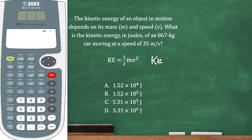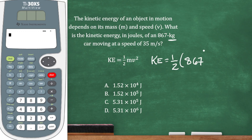KE equals one-half times m. We know m is the mass, and mass is often expressed in kilograms, so we've got 867 in place of m, and then times v squared. V is the speed — they tell us the speed is 35 — and we do have to square that. Now all we have to do is enter it into the calculator.